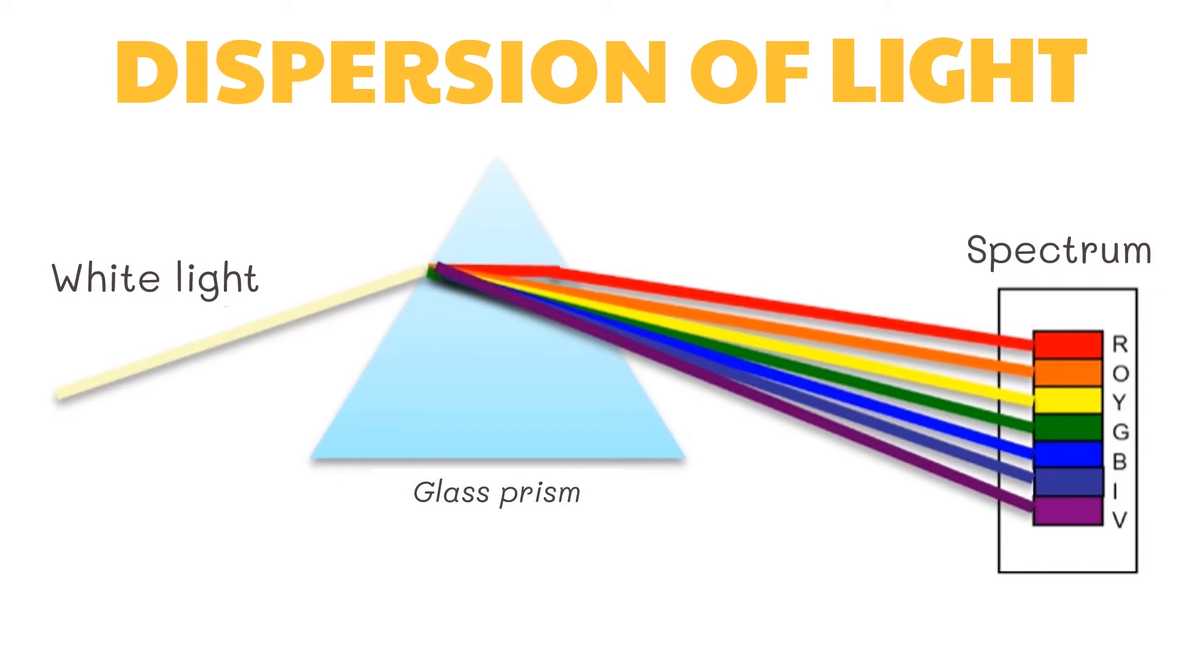Although white light can be split or dispersed into seven colors, only three colors of light are required to combine and give white light. These colors are red, green, and blue, which are also known as the primary colors of light.